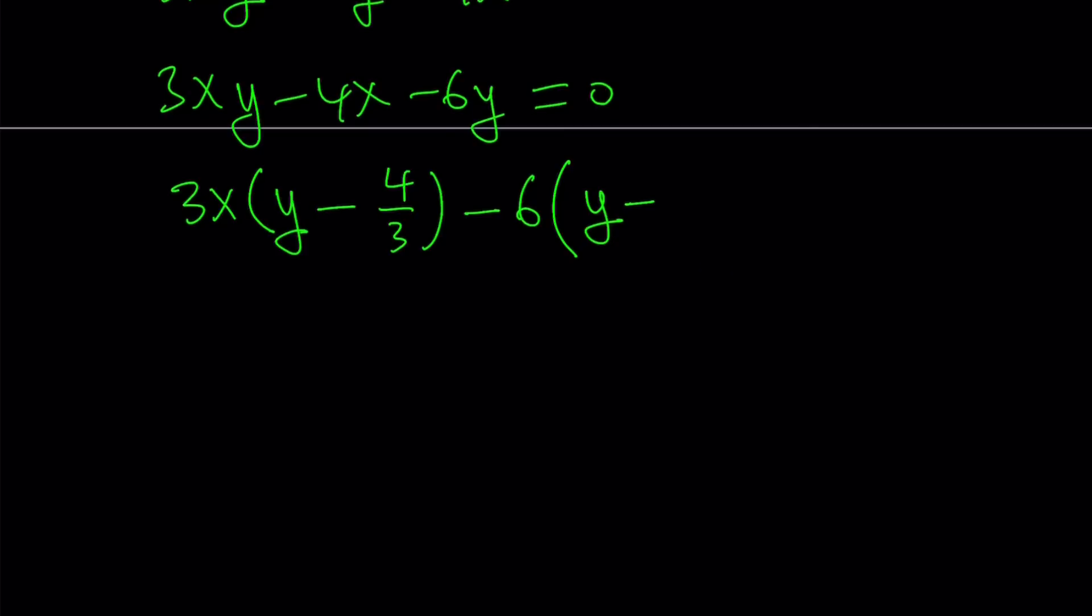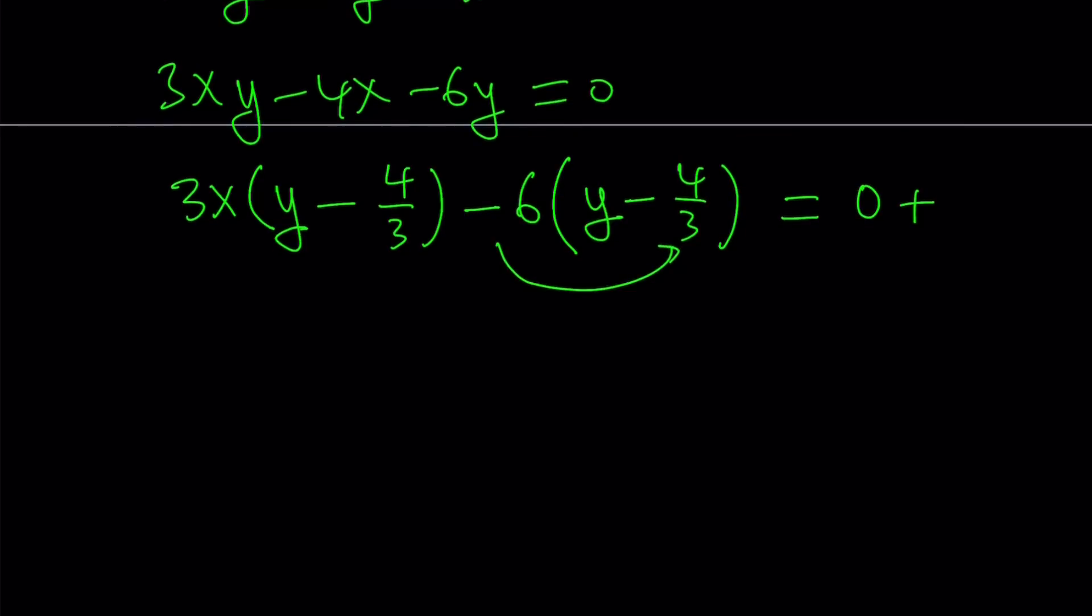So I have 0 on the right hand side but since I'm adding this to both sides, which is 6 times 4 thirds and that's actually equivalent to 8, I'm adding 8 to both sides.